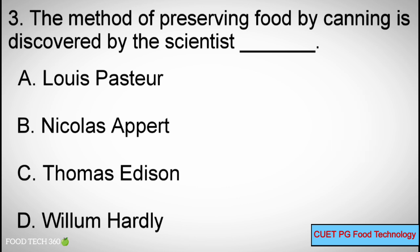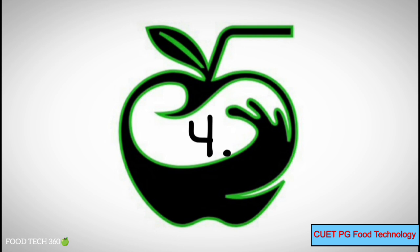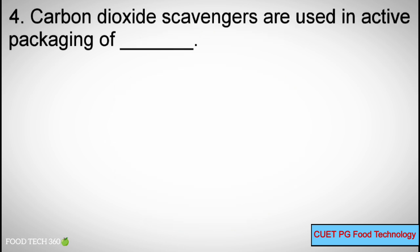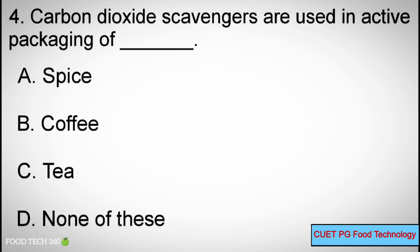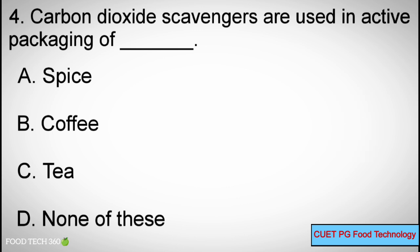Correct answer: B) Nicolas Appert. Question number 4. Carbon dioxide scavengers are used in active packaging of dash. Options: A) spices, B) coffee, C) tea, D) none of these. Correct answer: B) coffee.